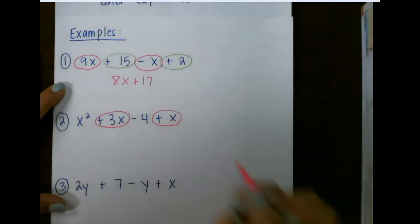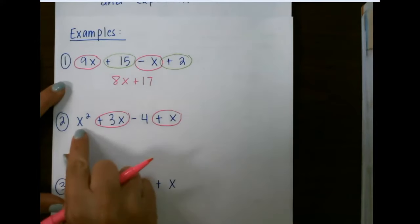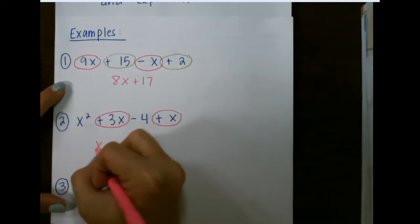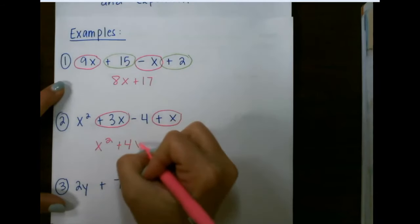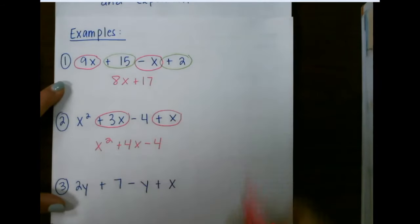3x and x. We always want to start with putting our exponents first. 3x plus x would give me 4x, and then we just drop down minus 4.